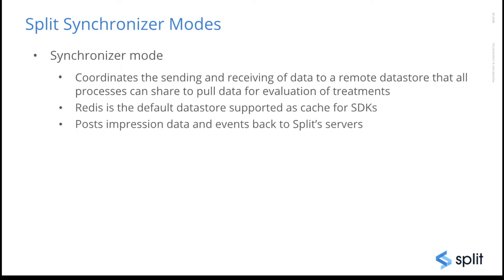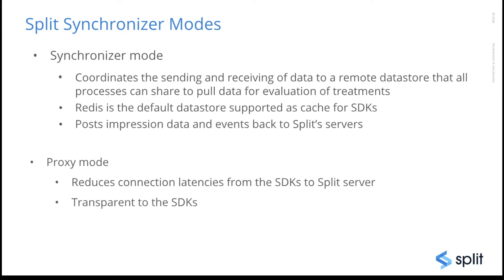The synchronizer has two modes. The first mode uses Redis as a database to store all the cache the SDK needs — to post impressions and read all the split definitions and segment information. We also have a proxy mode, which does not connect to any Redis database, so it uses in-memory storage for the synchronizer, which will require a machine with a better memory configuration.